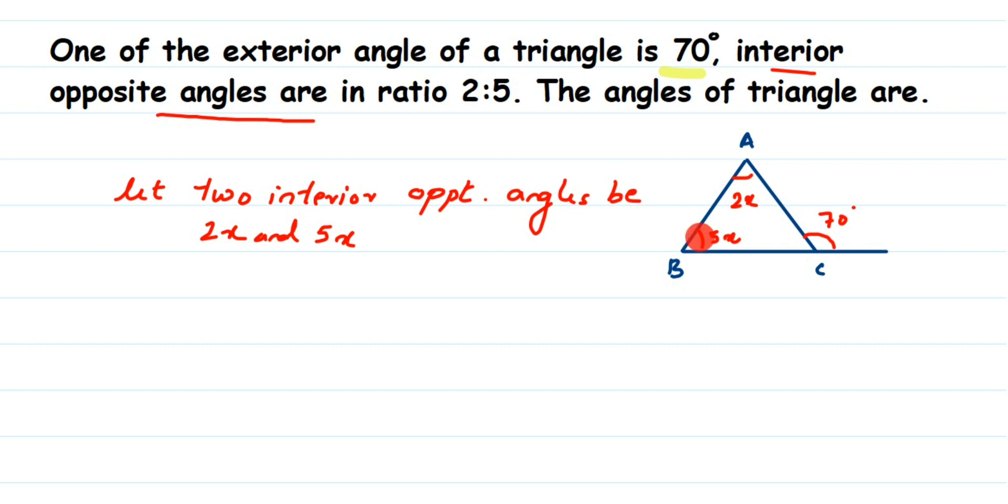The exterior angle of triangle, so here exterior angle is 70 right. This 70 will be equal to sum of these two angles, sum of two opposite interior angles. So based on that property of triangle, we can write down that 2x plus 5x will be equal to 70. So we are going to use this to get the value of x.